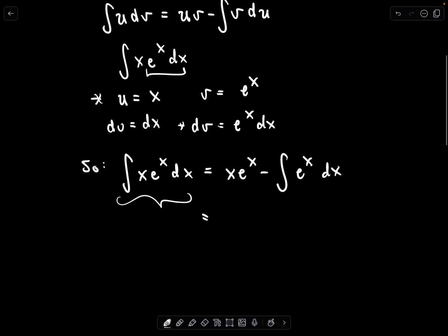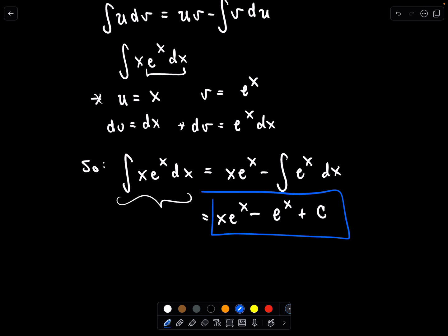Well, we know the antiderivative of e^x is just e^x, so we now have our solution simply by using integration by parts.